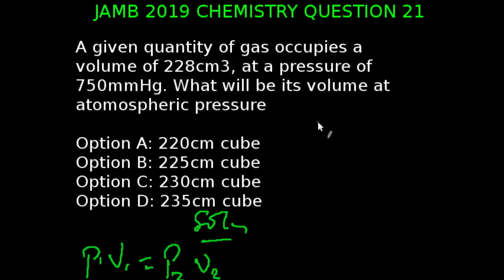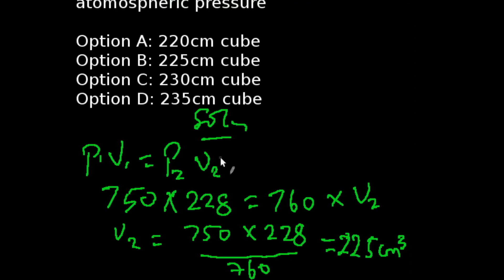Question 21 of JAMB 2019 Chemistry Exams. A given quantity of gas occupies the volume of 228 cm³ at the pressure of 750 mmHg. What will be its volume at atmospheric pressure? This is from Boyle's Law. So we're going to be using P₁V₁ is equal to P₂V₂ where P and V are the pressures and volumes respectively.